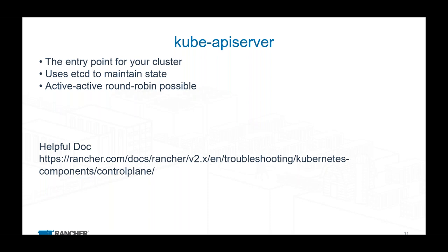The other big component is the Kube API server. Think of this as the orchestrator of your cluster — it's the guy making decisions and your single point of contact for the cluster. This is what you interact with most; kubectl, and almost everything in Kubernetes talks to it. It runs on your control plane and is active-active, so you can load balance across it. If one goes down, it immediately takes over.